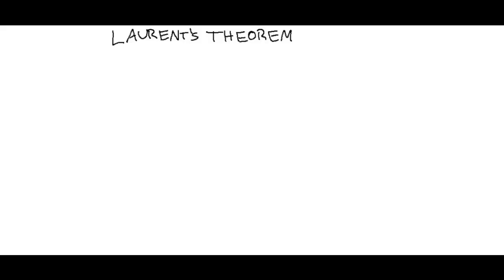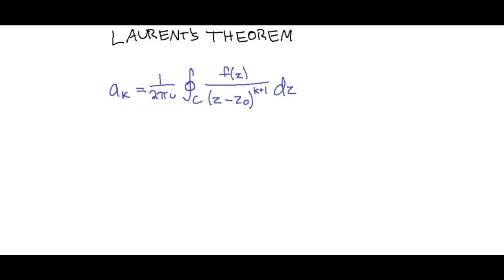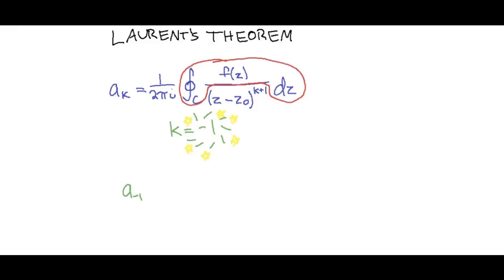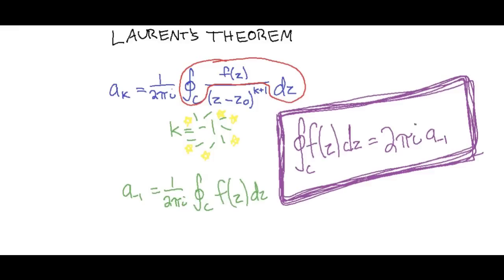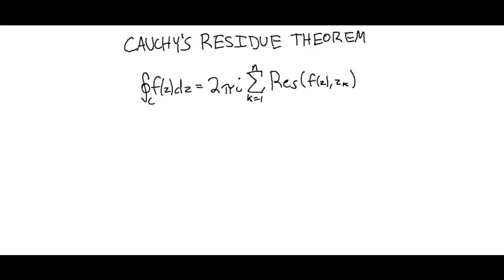The next stop in our adventure is Laurent's theorem, which tells us how to find the a sub k coefficient for the Laurent series. The coefficient is equal to 1 over 2πi times the integral of the function over (z − z₀)^(k+1). Do you see this? This is what we were looking for at the start of the video. We're going to get this for k = −1. This means (z − z₀) is raised to the 0 power, which is 1, and our a sub −1 term — our residue — is equal to 1 over 2πi times the integral. Or, our integral is equal to our residue times 2πi. Cauchy's residue theorem states that the integral is equal to the sum of all of the residues of the function inside our boundary.